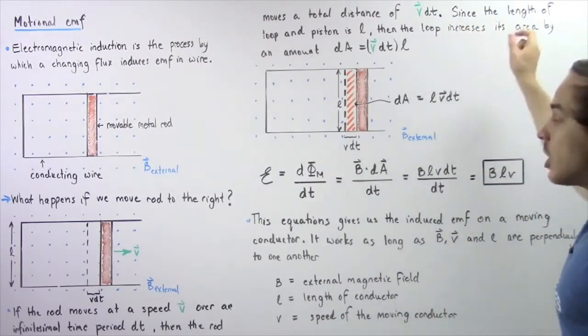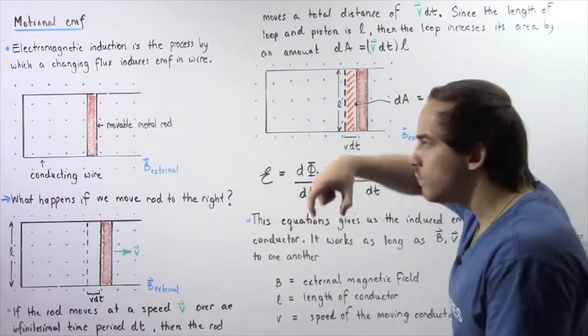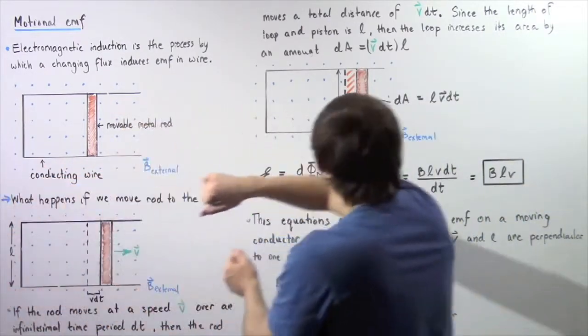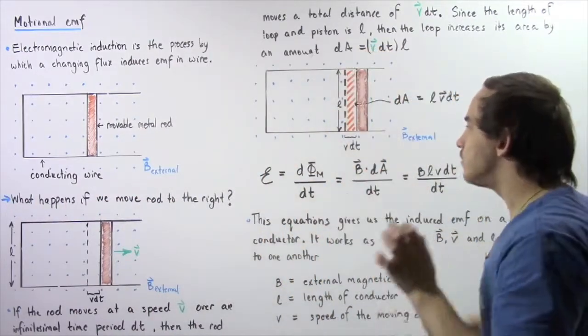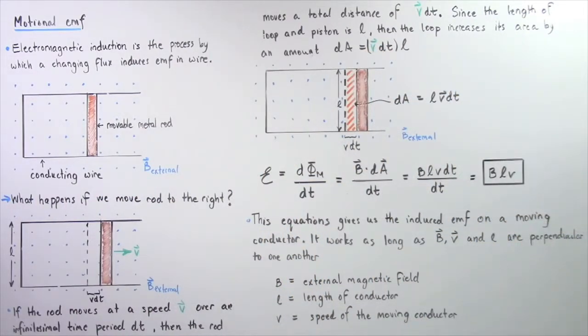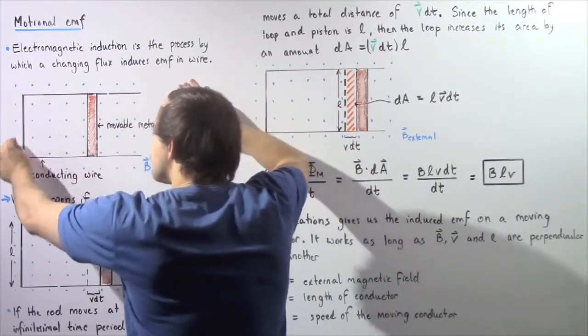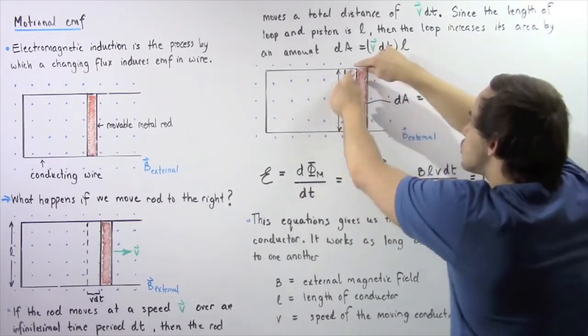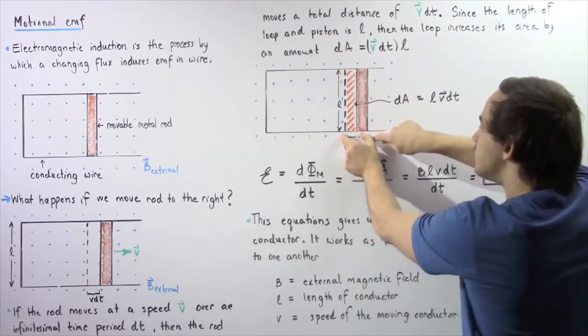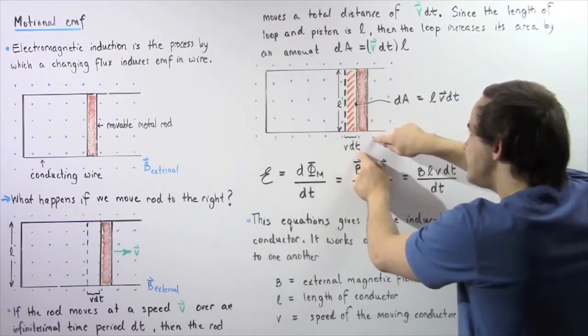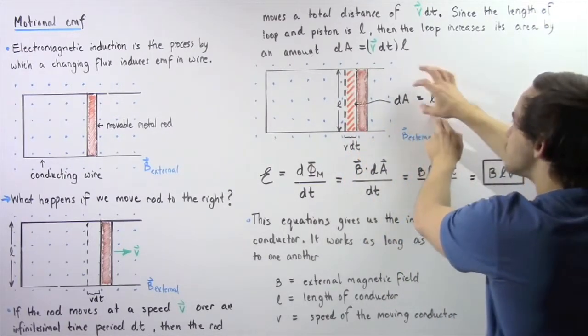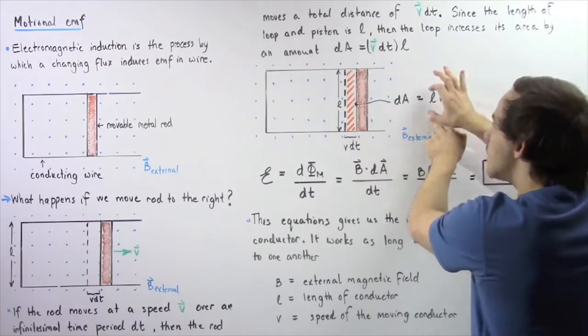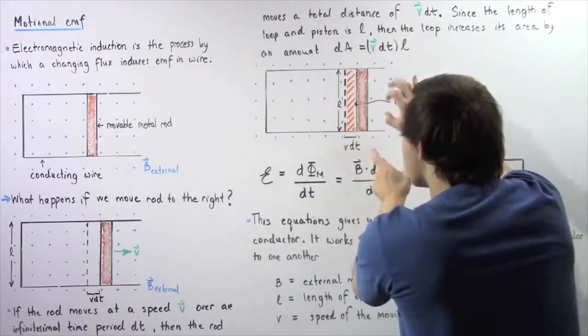Since the length of the loop and the length of our movable metal rod is equal to L, so this distance is L and this distance is L, that implies the change in our area of this initial loop of wire is given by the following orange region. We take the height given by L multiplied by the width given by V times DT, and that gives us our infinitely small change in area that takes place as a result of our moving conducting metal rod.